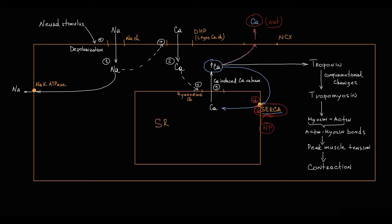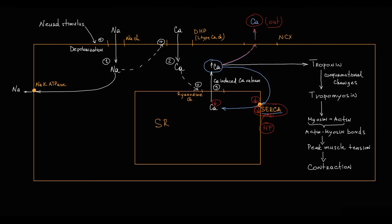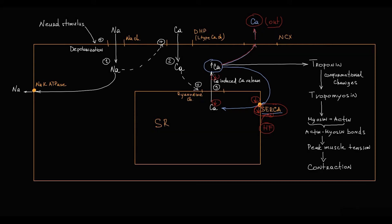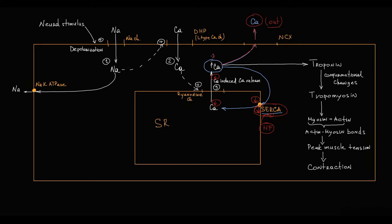Basically, this causes a decrease in the amount of calcium in the endoplasmic reticulum, and because of that, during the next contraction, calcium release from the endoplasmic reticulum into the cytosol will be substantially decreased. With a decrease in calcium level in the cytosol, the force of contraction decreases. This phenomenon is called the negative Bowditch effect.